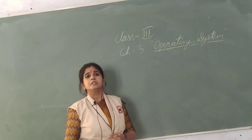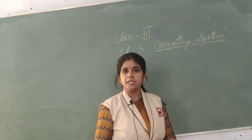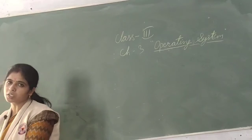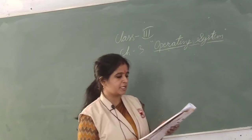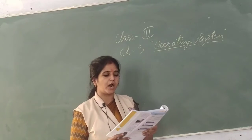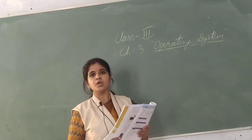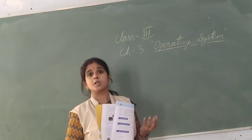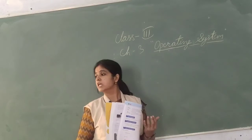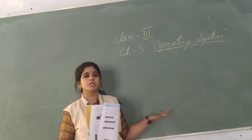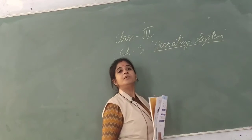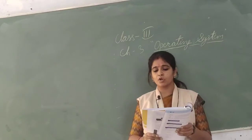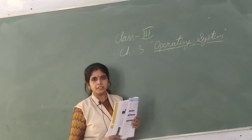Just like mobile, a computer also requires an operating system to operate it. There are many types of operating systems which we will discuss in this video. Take out your book and start reading chapter number three with me — I am on page number 39. You know that computer hardware cannot work without software. Hardware are the physical components that can be touched or seen by the user, and software are the set of instructions which tell the computer what to perform.